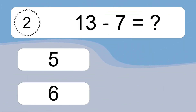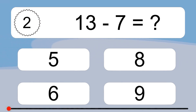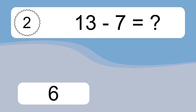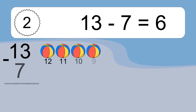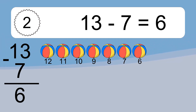13 minus 7 equals what? 13 minus 7 equals 6. Let's count it: 12, 11, 10, 9, 8, 7, 6.